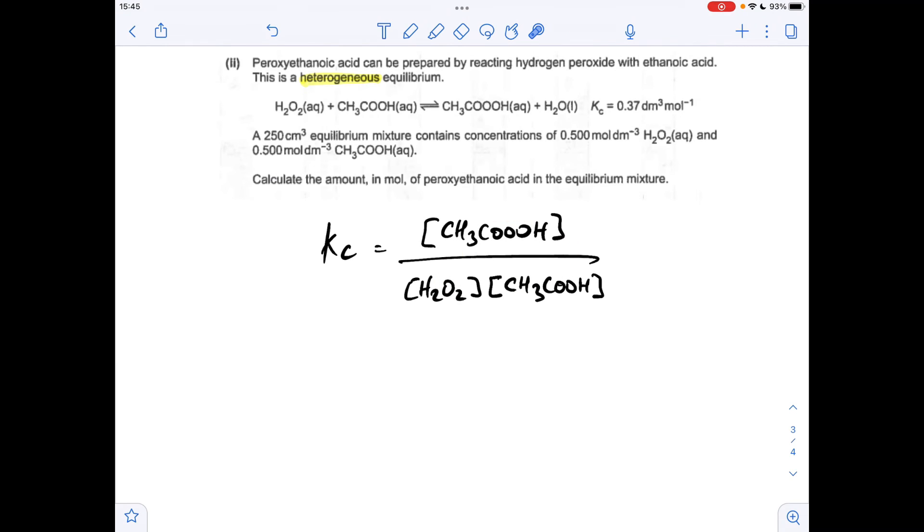The Kc expression is going to look like that. It's the equilibrium concentration of the products, but we're ignoring the water, over the reactants. Multiply together, not added. Then we rearrange to get the concentration, the equilibrium concentration of the peroxyethanoic acid. Now we sub in these values because they're all in the information there. That gives us an equilibrium concentration for the peroxyethanoic acid of 0.0925 mol dm⁻³.